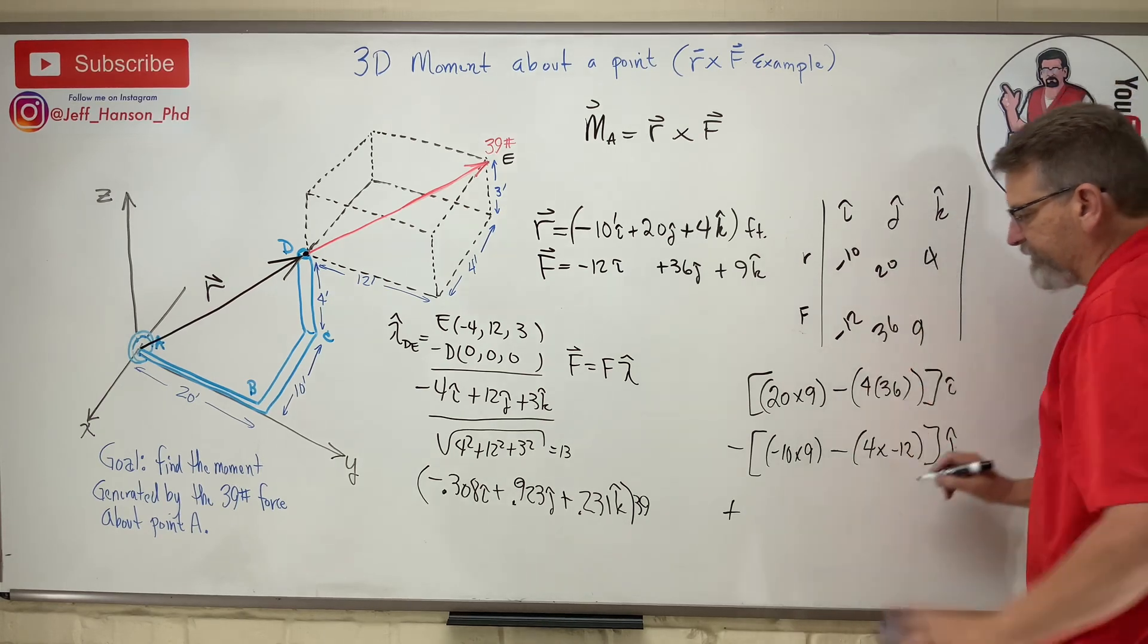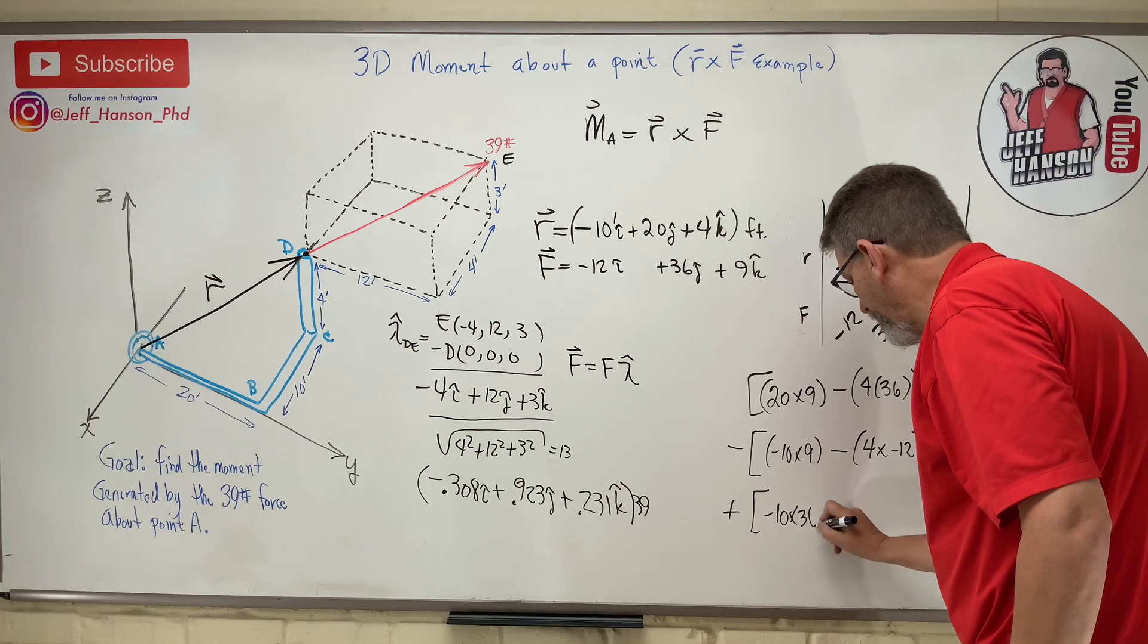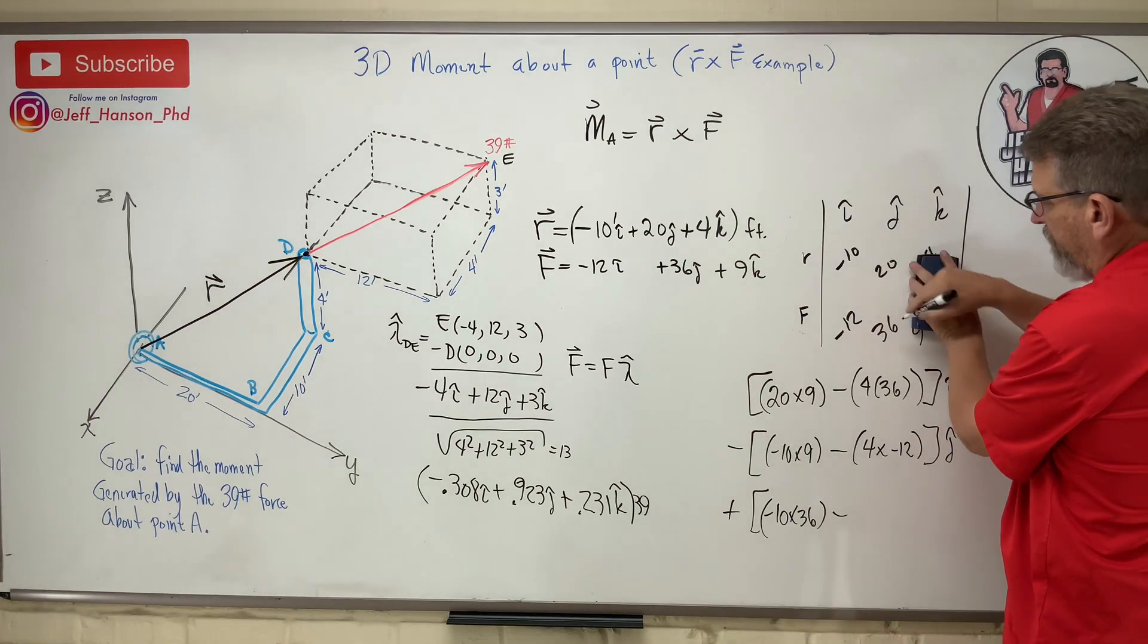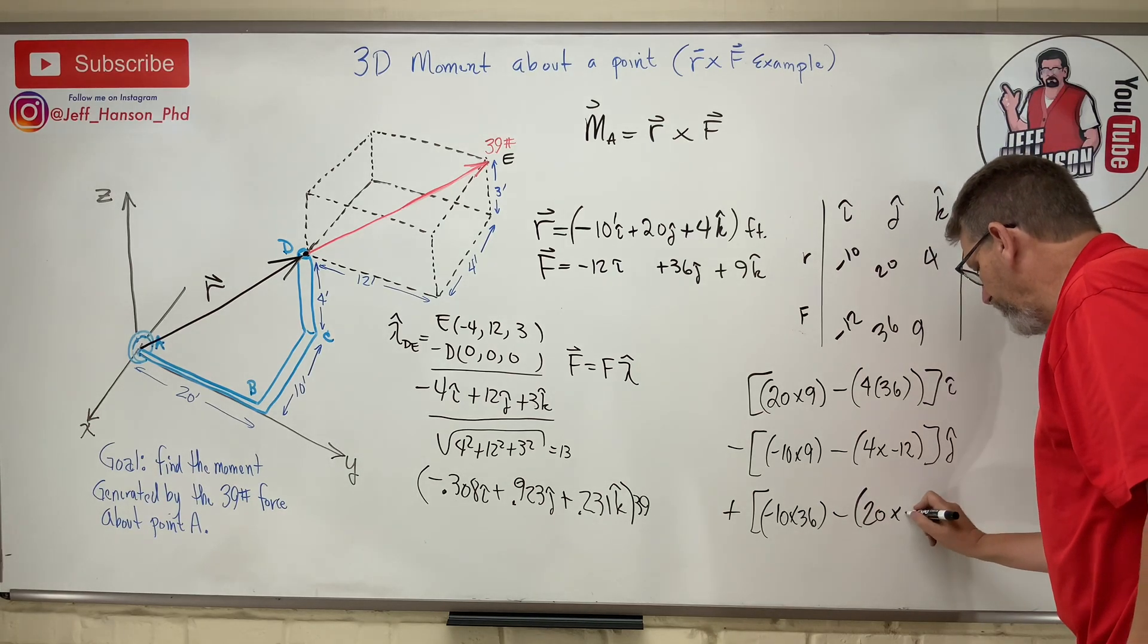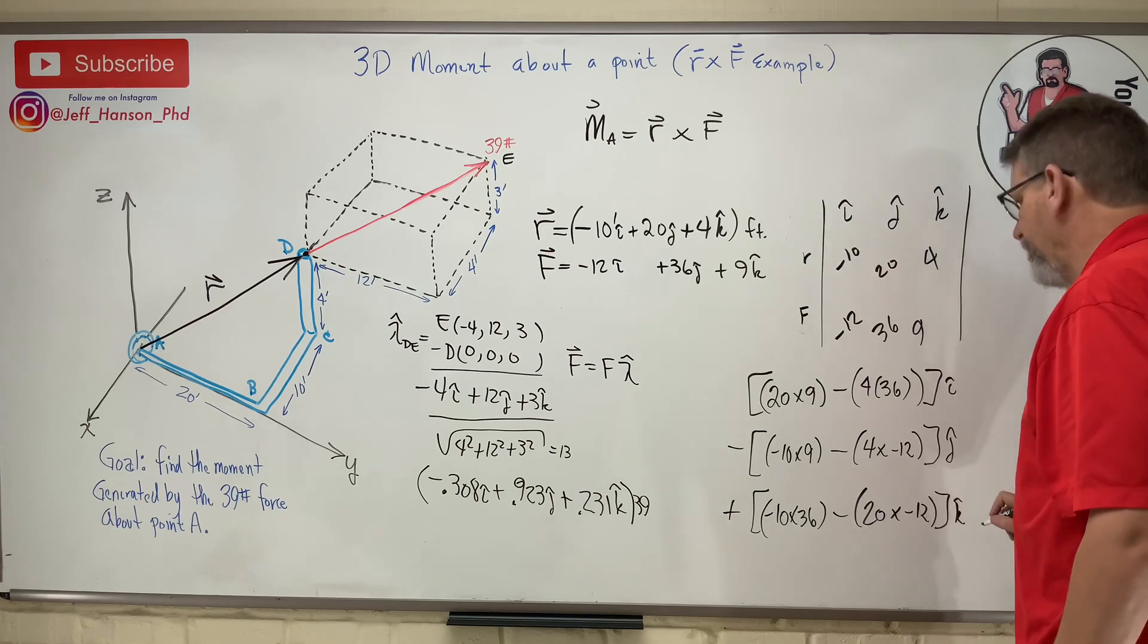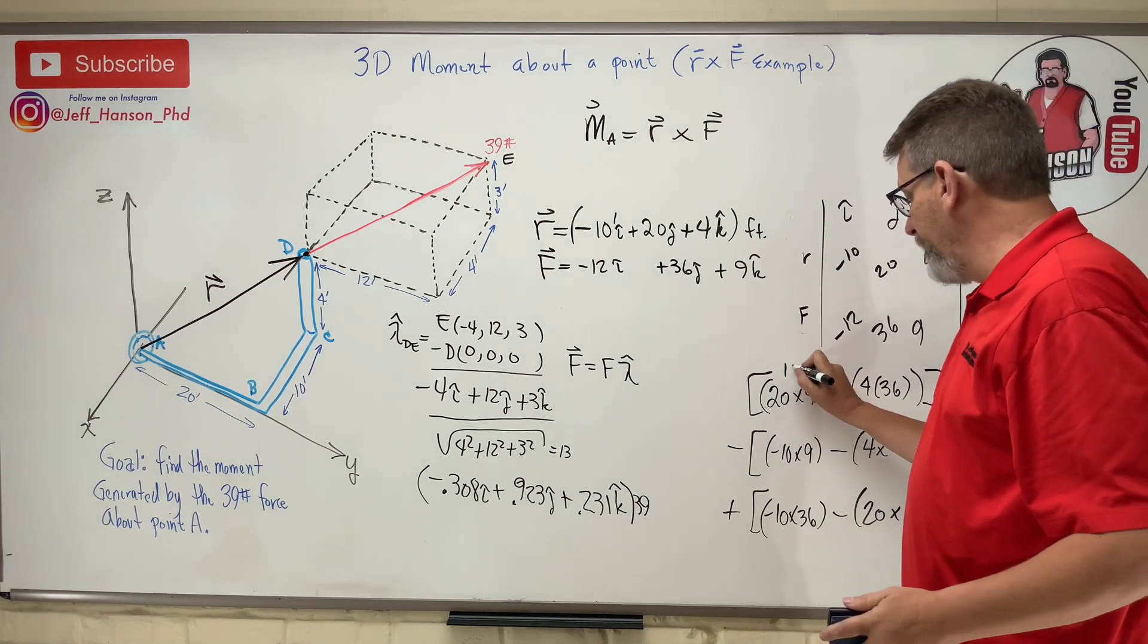And finally k-hat down here at the bottom. Cover up the k and I get negative 10 times 36 minus 20 times negative 12. We just got a little number crunching to do.